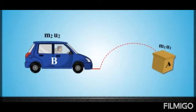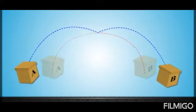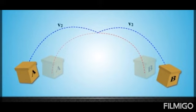Now imagine object B collides with object A. Object A is pushed forward with a force F1 and moves with final velocity V1. When both objects collide, there is a final velocity V2 with which object B moves after collision, and a force F2 acting on it due to the collision. So the final momentum of B is m2·V2 and the final momentum of A is m1·V1.